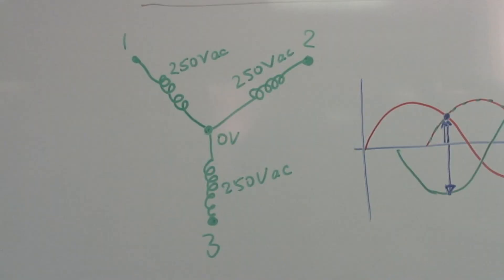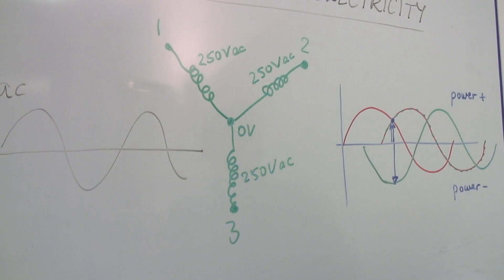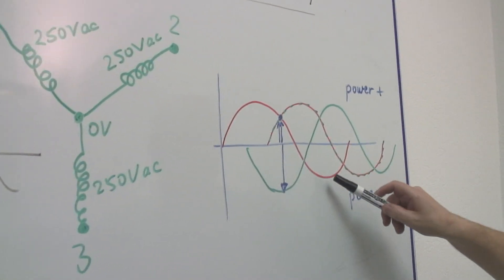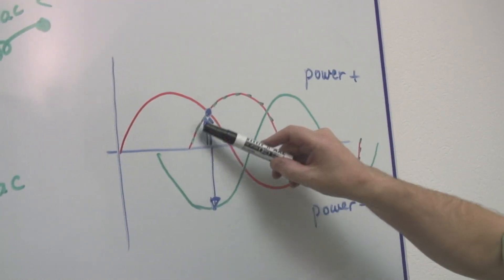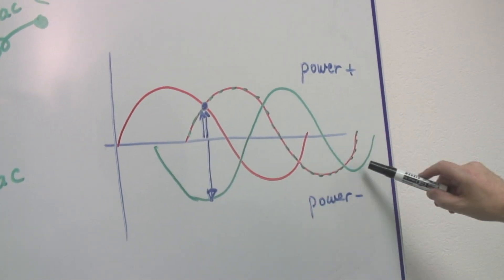But if you're very cunning and you arrange three electric generators and connect them together, you will generate like this. For one of them, you'll generate like that. For the next, you're generating like this. And the next you're generating like this.